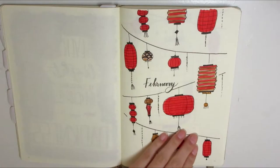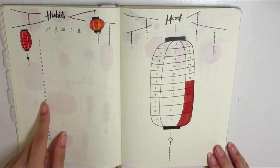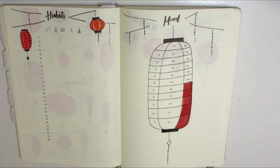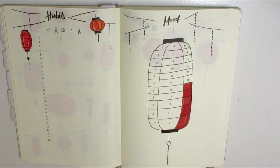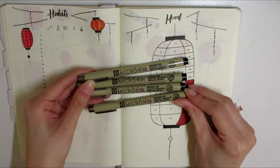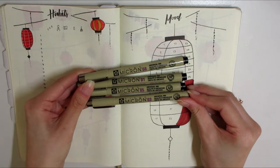That's basically it for the February plan with me. As you can see I have my habits—I forgot to add in the dots with the habits but I will do that after this video is finished. I have the mood tracker. Basically I colored in the extra spaces for the lanterns and I used a variety of these markers to do the trick.